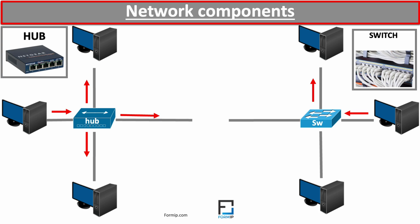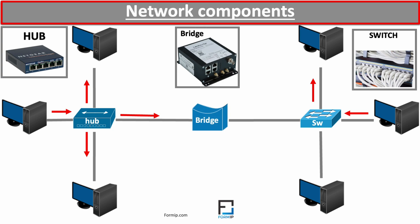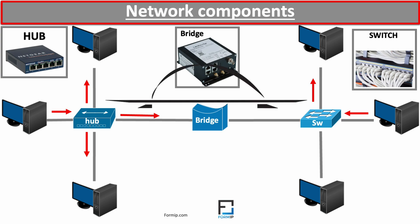Now let's move on to the network bridge. This type of equipment is used to divide a network into collision domains. For example, if you have a network segmented in two by hubs, all broadcast traffic from both segments is seen by all computers, causing unnecessary traffic. Adding a bridge reduces all unnecessary traffic between the two segments, as data is filtered based on their MAC address. The bridge forwards data only if it encounters a destination MAC address belonging to the other segment, since — just like switches — it keeps a record of all MAC addresses.